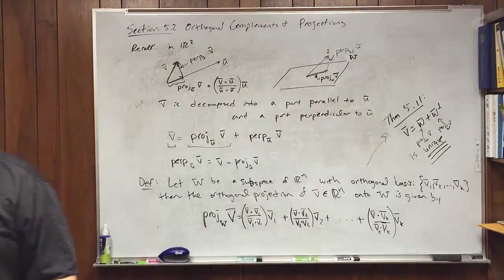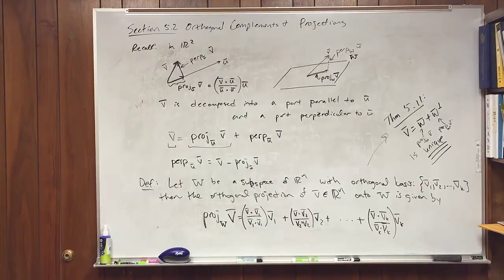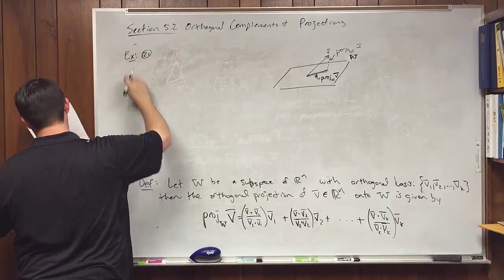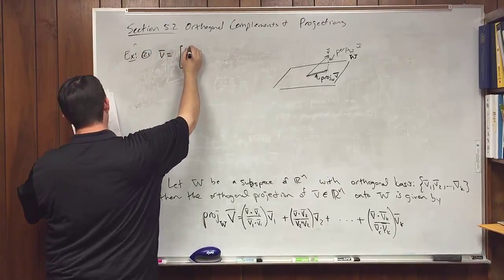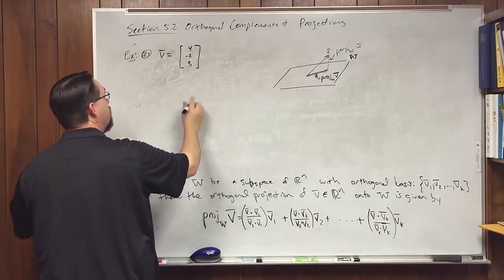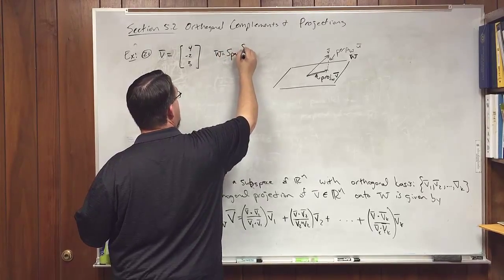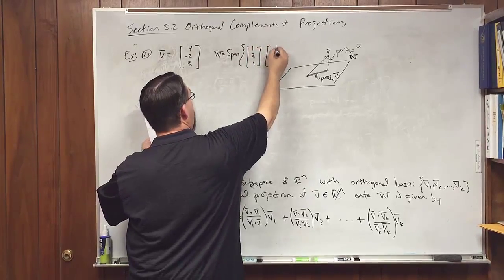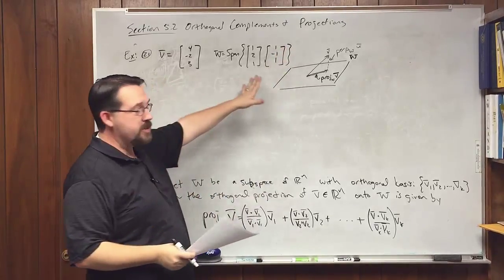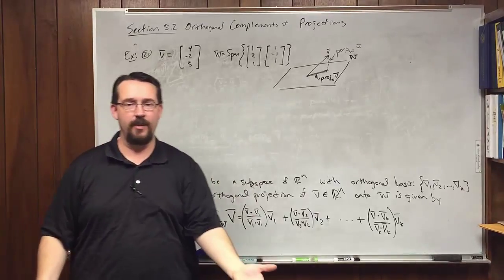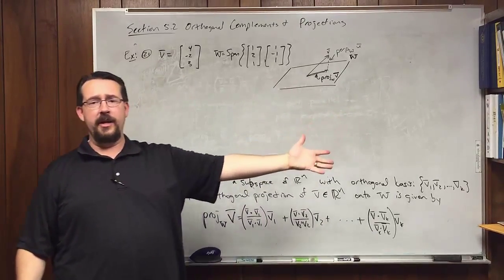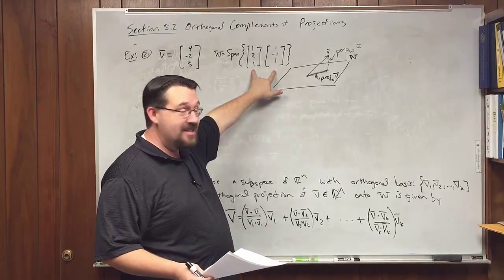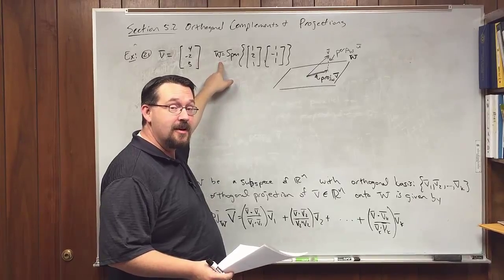For the example — number 21 from the homework — let V = (4, −2, 3) and let W be the span of V1 = (1,2,1) and V2 = (1,−1,1). You can check these are orthogonal: their dot product is 1·1 + 2·(−1) + 1·1 = 0. So these form an orthogonal basis for W, a plane subspace of R3.